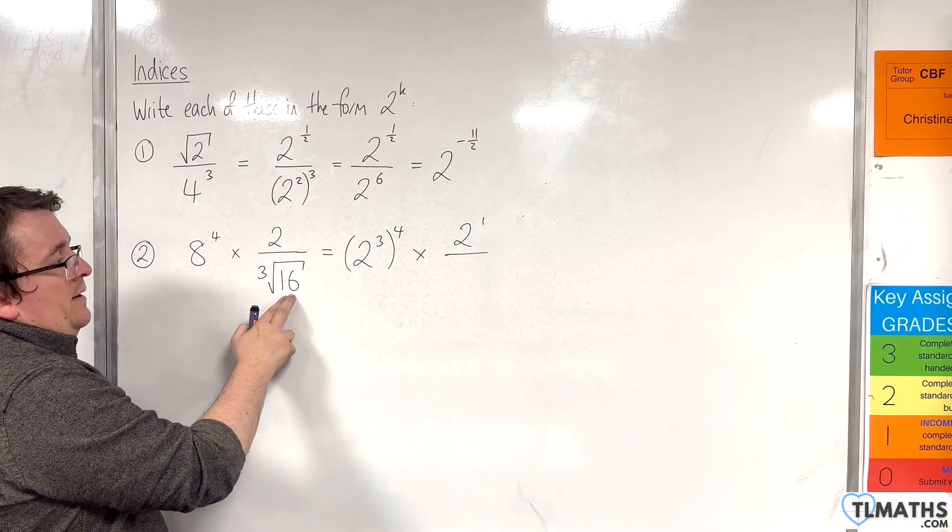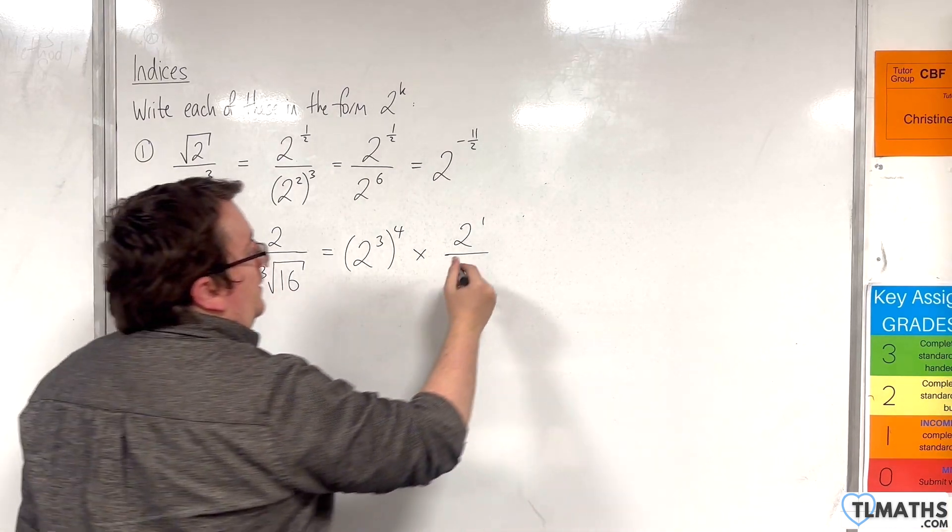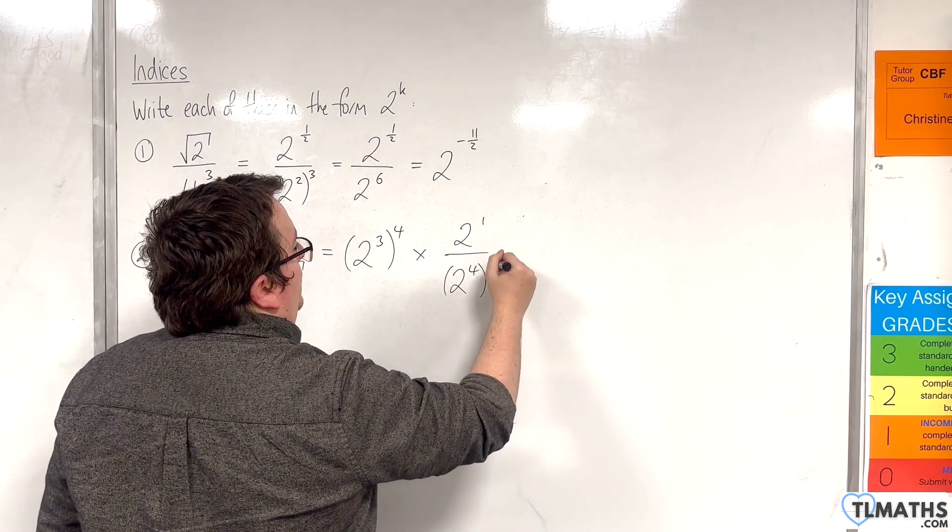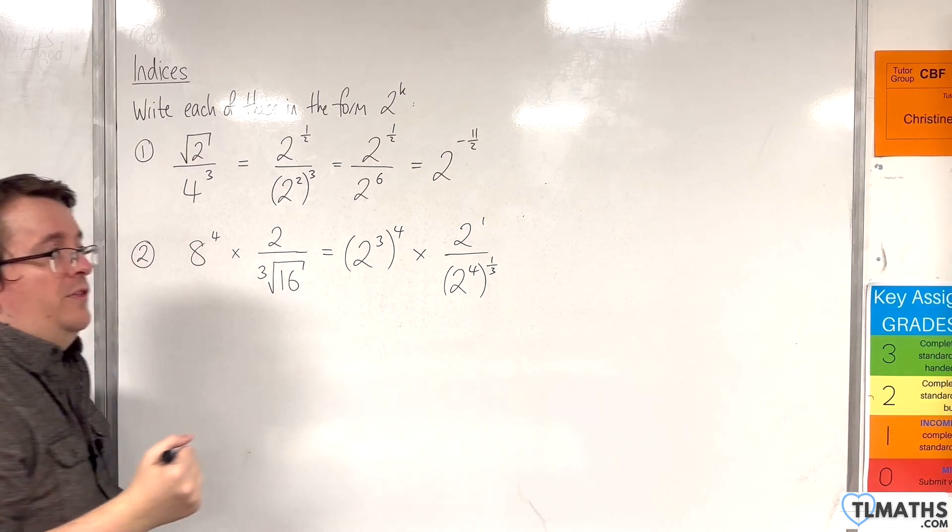And 16 is 2 to the power of 4, and that's being cube rooted. So 2 to the power of 4 is the 16, the cube root is the same as writing that to the power of a third.